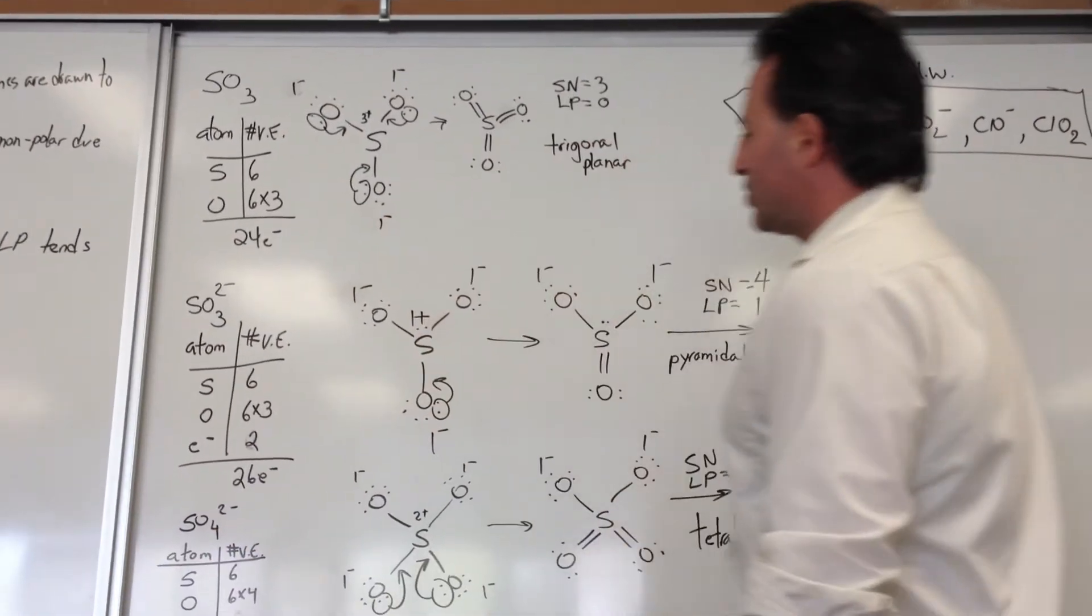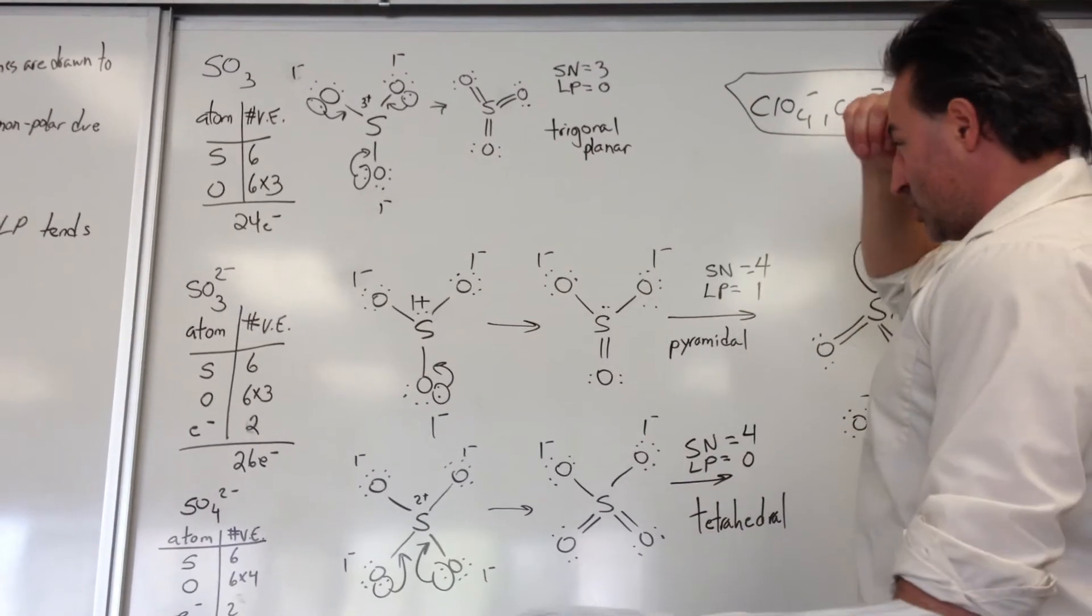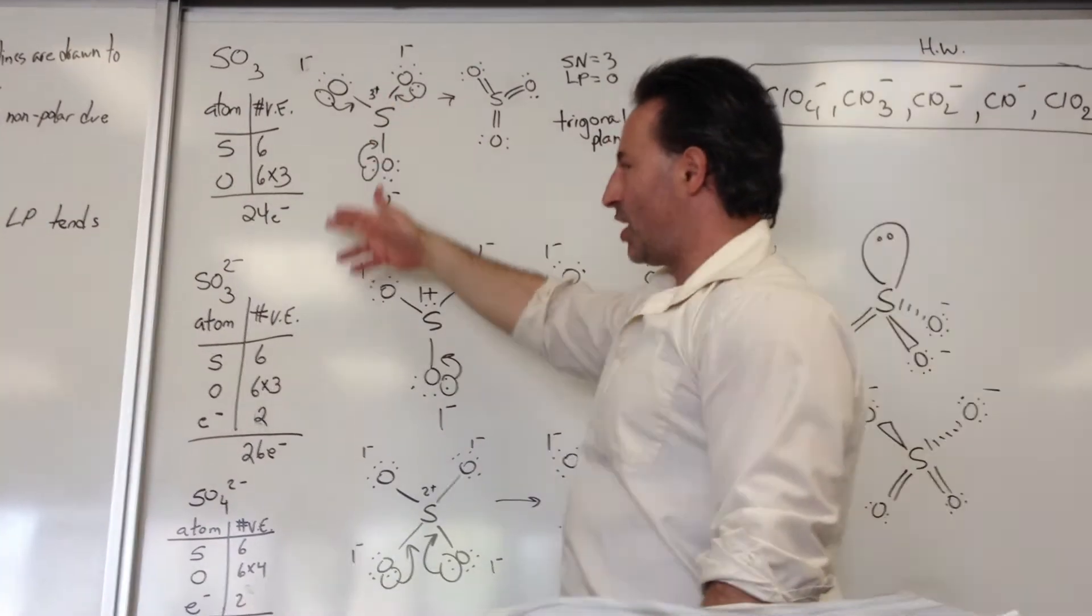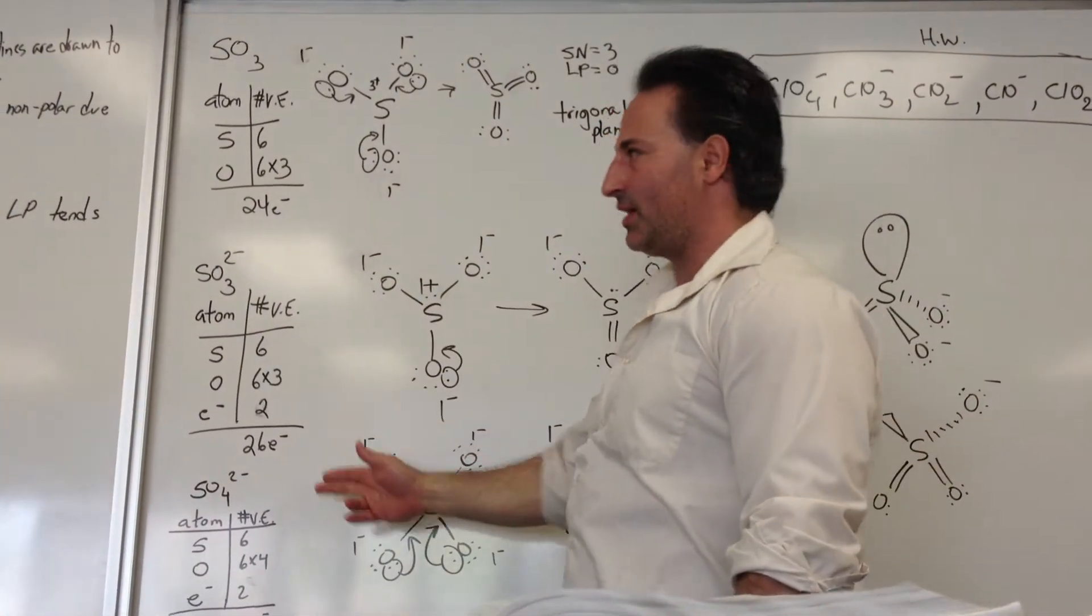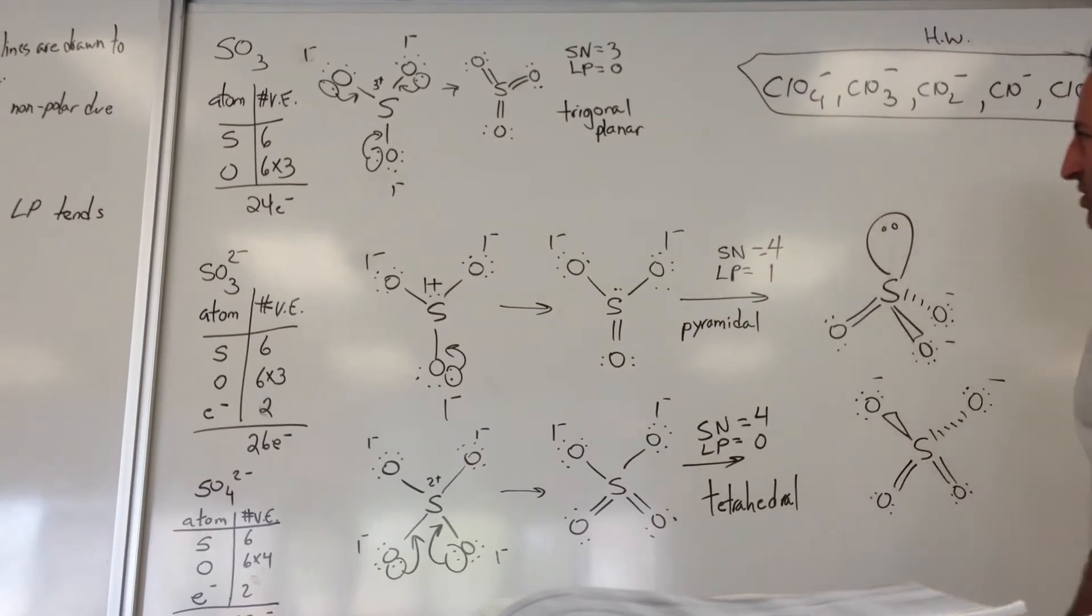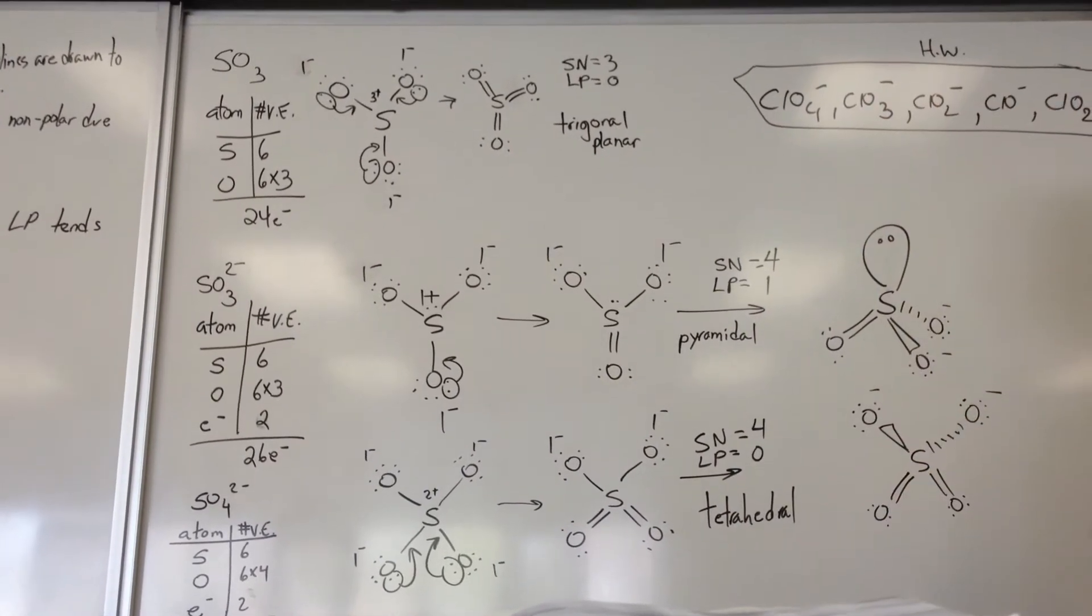And this question I put together makes a nice exam question where you could be asked to show the geometry of sulfur trioxide, the sulfite, and the sulfate anion. And you see that it ends up being trigonal planar, pyramidal, and tetrahedral.